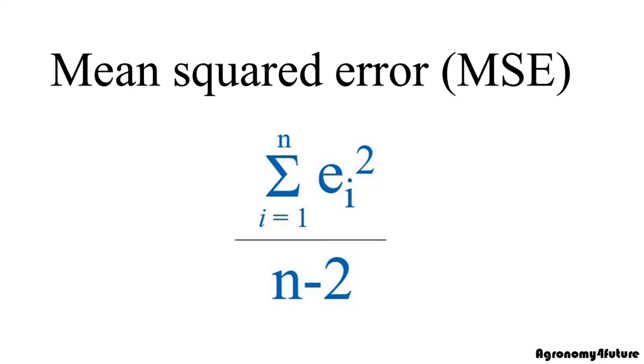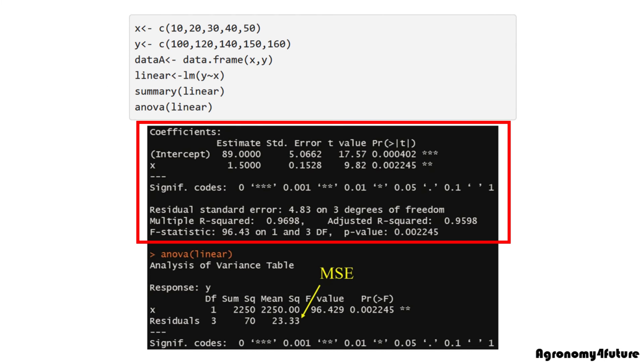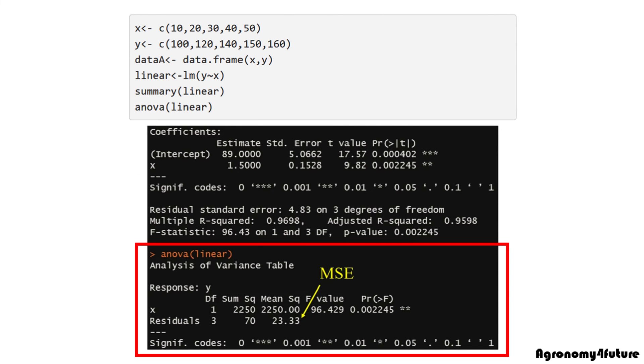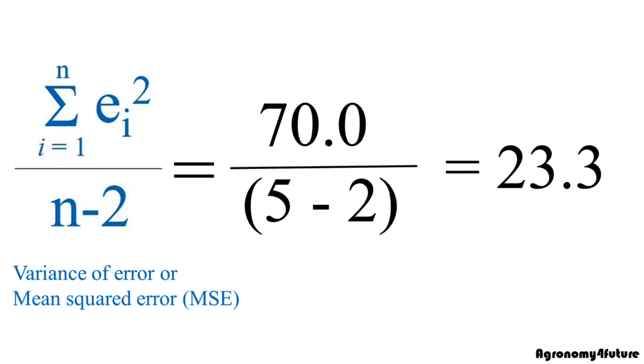One is the table for coefficients, and another is the ANOVA table. In the ANOVA table, you can find MSE. It's 23.33. It's the same value as we calculated by hand.